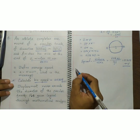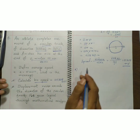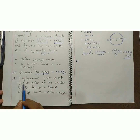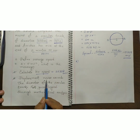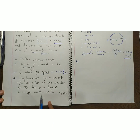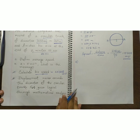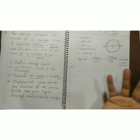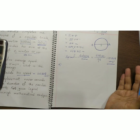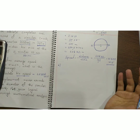Now for the last question: the displacement never exceeds the diameter of the circular track. We need to prove this through logical and mathematical analysis.